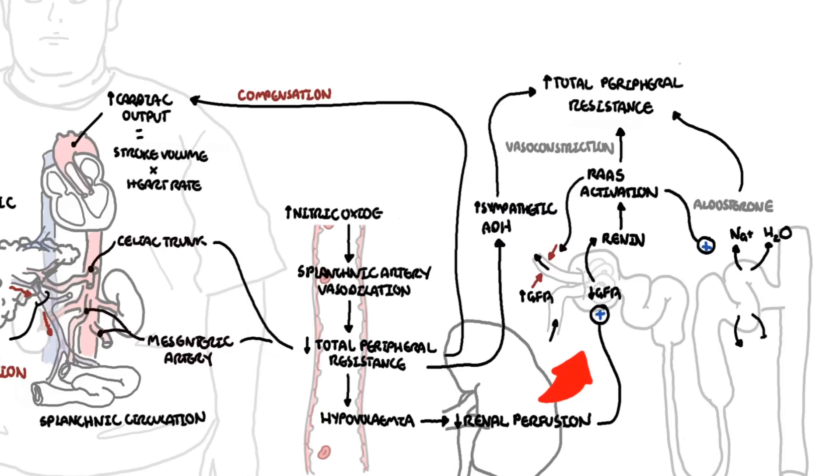Unfortunately, in liver disease all this fluid leaks out, resulting in peripheral edema and ascites. And so despite this mechanism, the kidneys still become underperfused due to the fall in systemic vascular resistance.